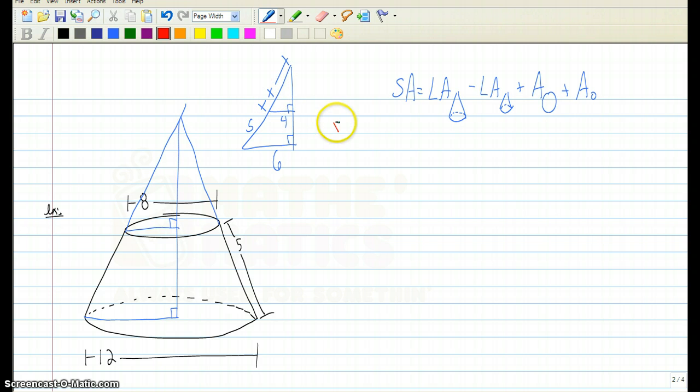Specifically x over x plus five, because those two sides are corresponding to each other in those similar triangles, is equal to four over six. Four over six would simplify to two-thirds. Cross multiply: 3x is equal to 2x plus 10 which means that x equals 10.